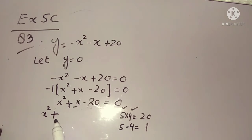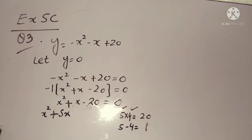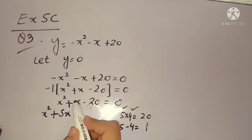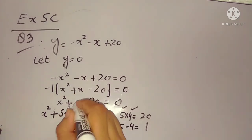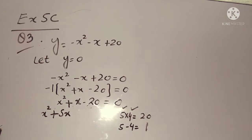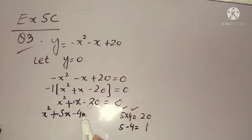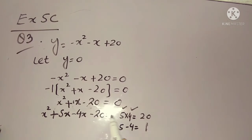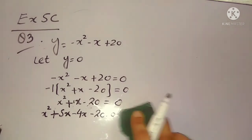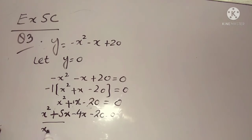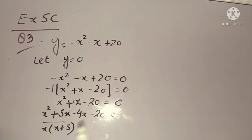Now we can take minus sign common. If we take minus sign common, what is left is x², and the signs inside the bracket will be changed — so we get: -(x² + x - 20) = 0. When we divide both sides by -1, zero divided by -1 is still zero, so the equation becomes: x² + x - 20 = 0.